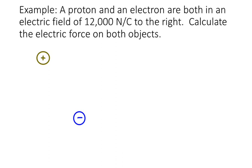So here I just represented them as spheres. The top one is a proton. You know that because it's positive. And the bottom one is an electron. You know that because it's negative. The electric force on a proton, since it's a positive charge, is going to be in the same direction as the electric field. So to the right. Whereas the electric force on the electron is going to be to the left, since it is oppositely charged.